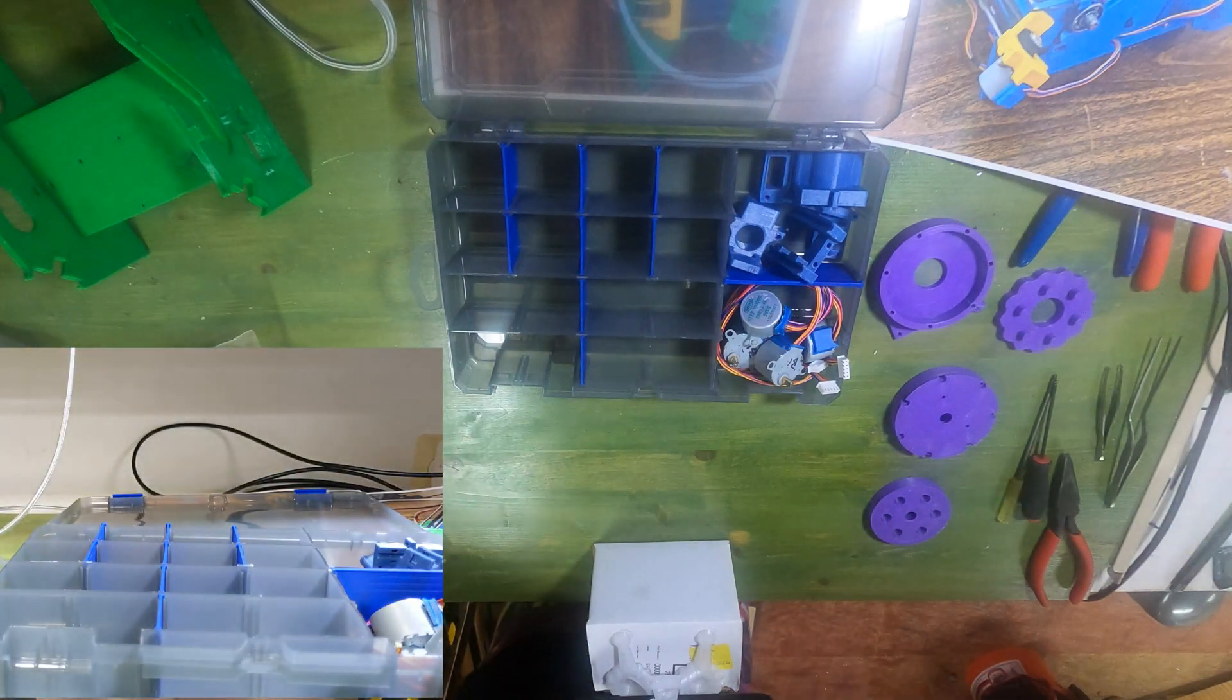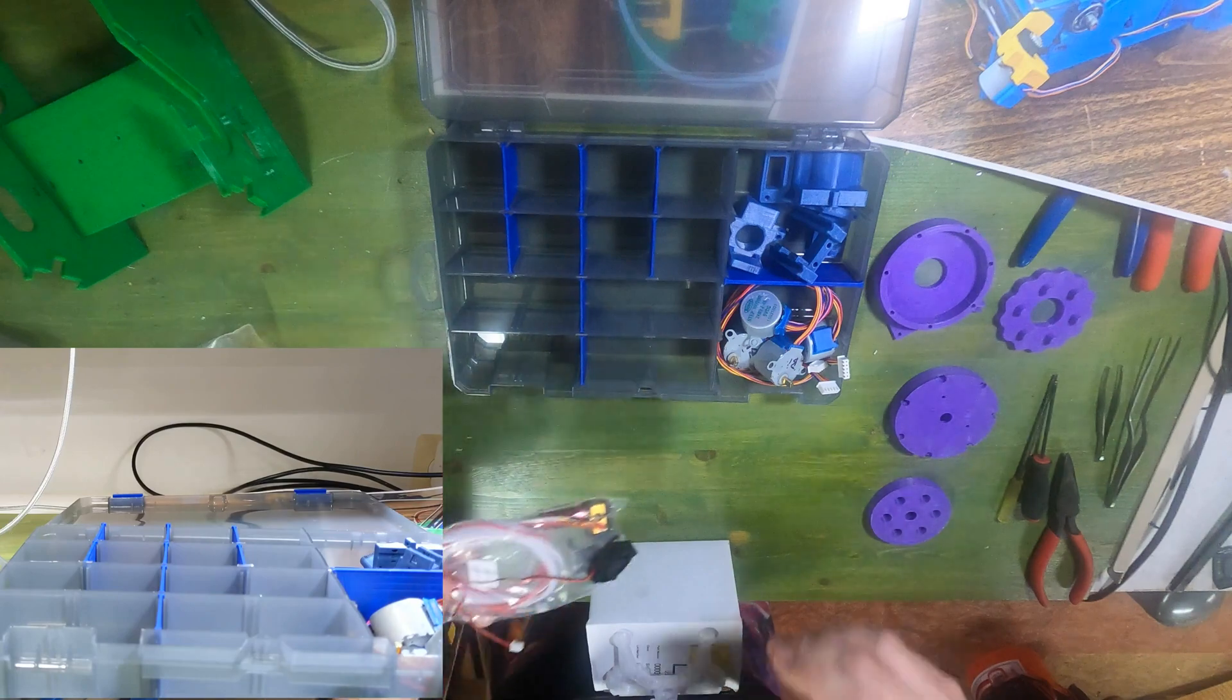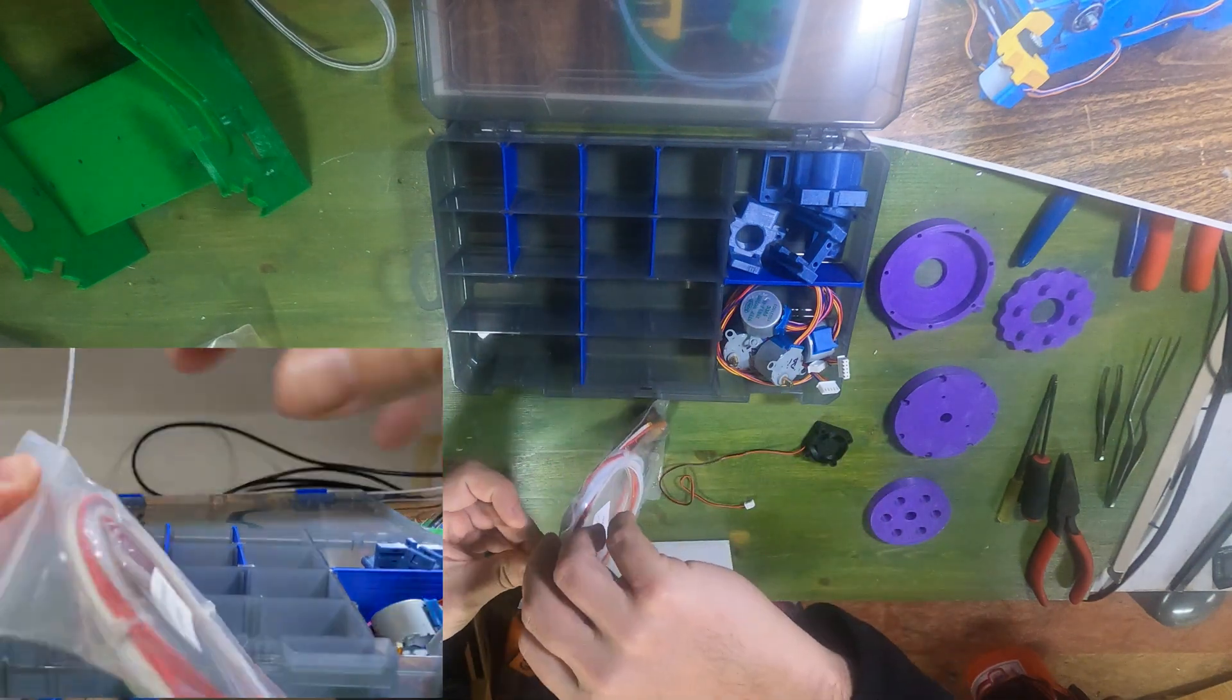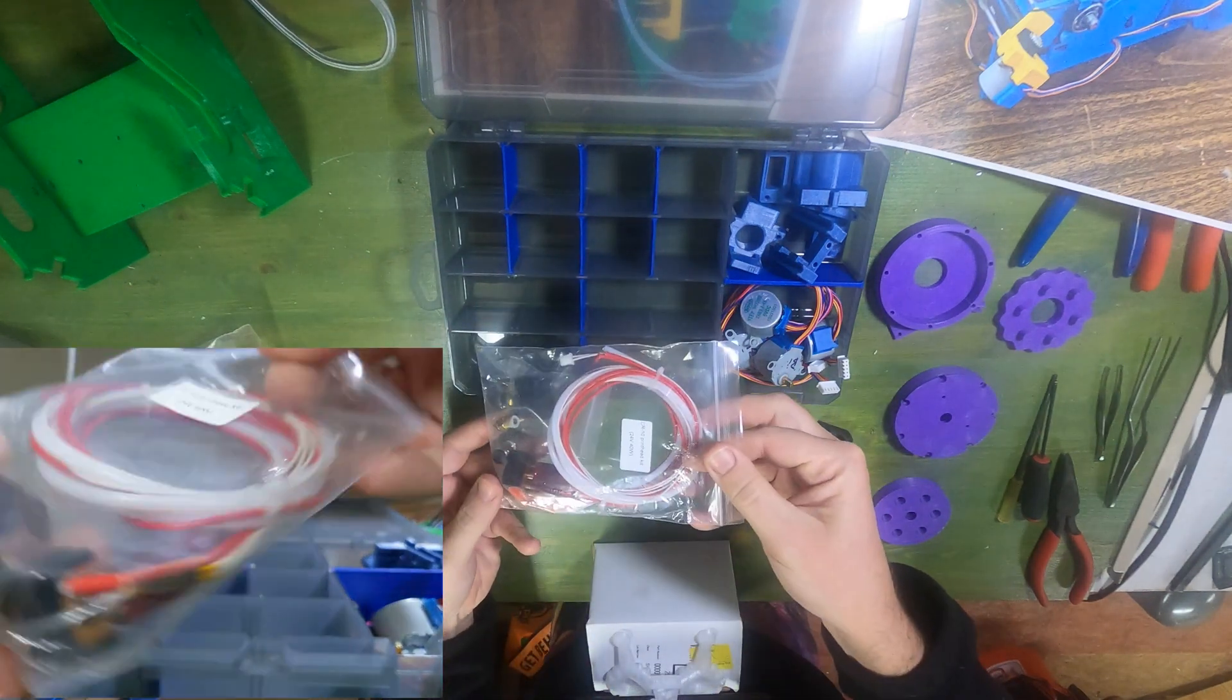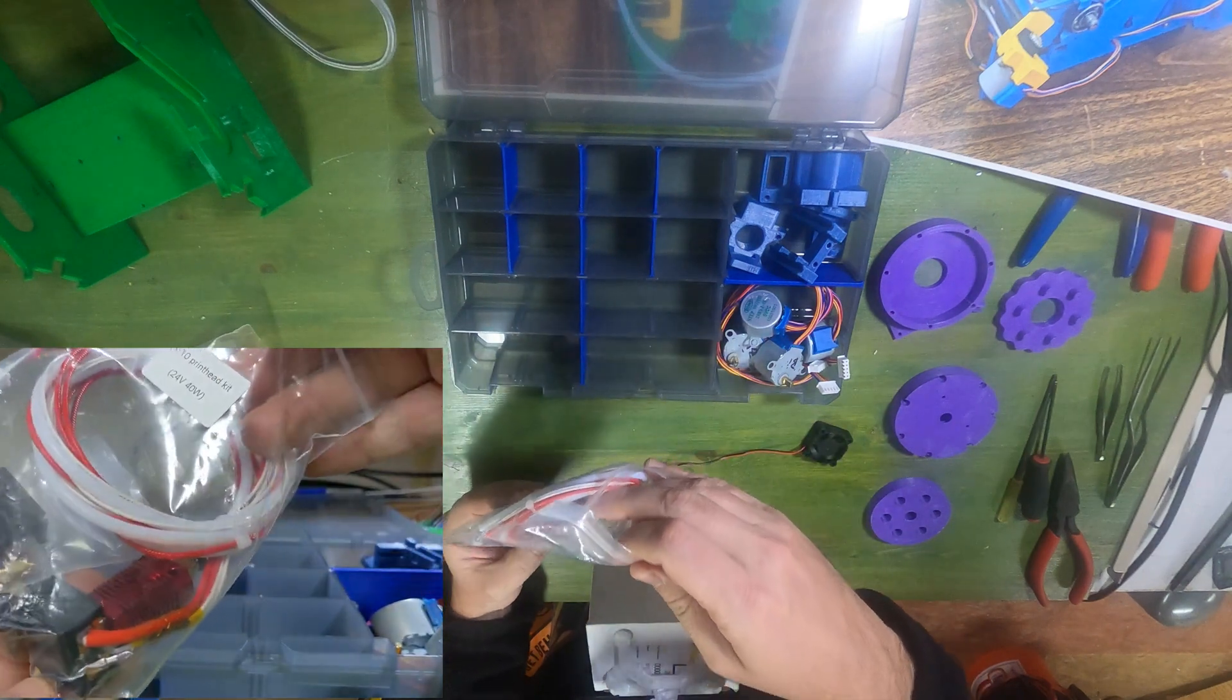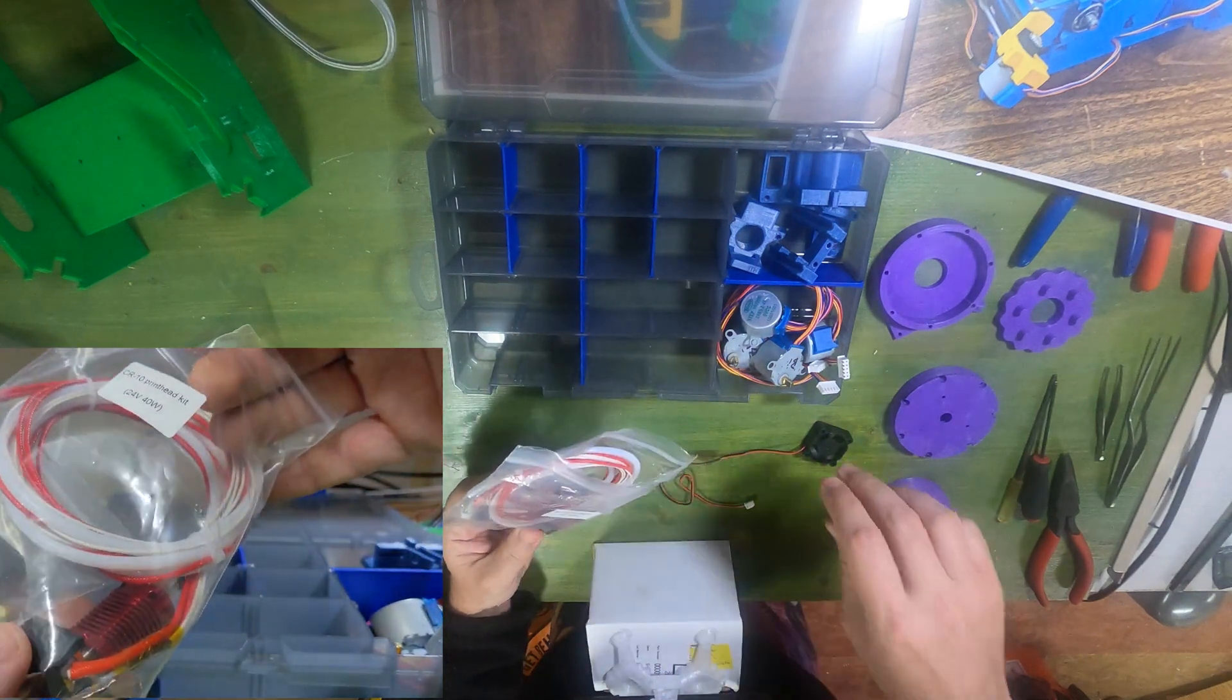The hot end we have here is a CR-10 hot end. This is actually a 12 volt hot end. Ignore the markings on the package. I did measure it. With no heated bed we're really only printing PLA so this is a fine choice. It's inexpensive and common.